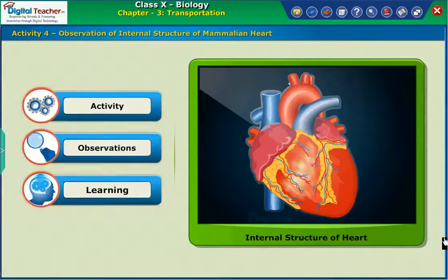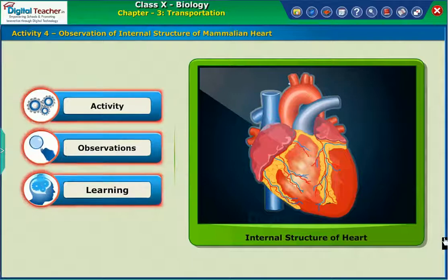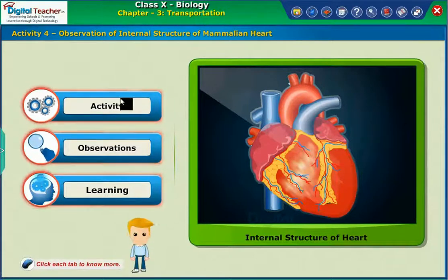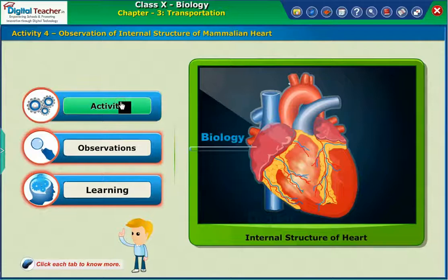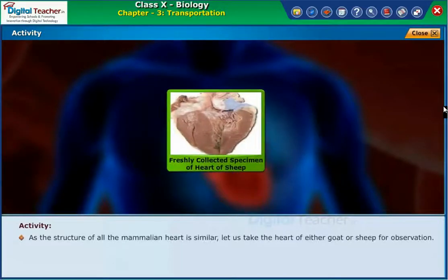Let us perform an activity to know the internal structure of the heart. As the structure of all mammalian hearts is similar, let us take the heart of either a goat or sheep for observation.